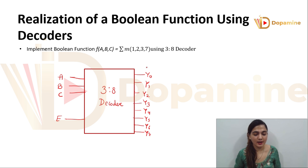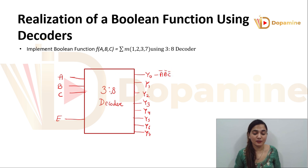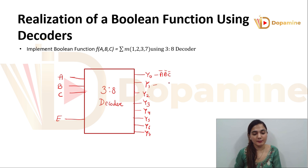Now these 8 outputs correspond to the 3 inputs, and we know each of these 8 outputs represents a minterm. So y0 represents the minterm a̅b̅c̅. I hope you have seen the video on the 3-to-8 decoder — if not, you can go watch that first, because I have already explained how y0 is represented by minterm a̅b̅c̅.